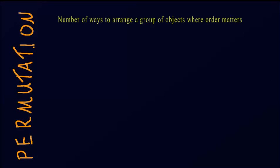Permutation is about the number of ways we can arrange a group of objects where the order of these objects matters.